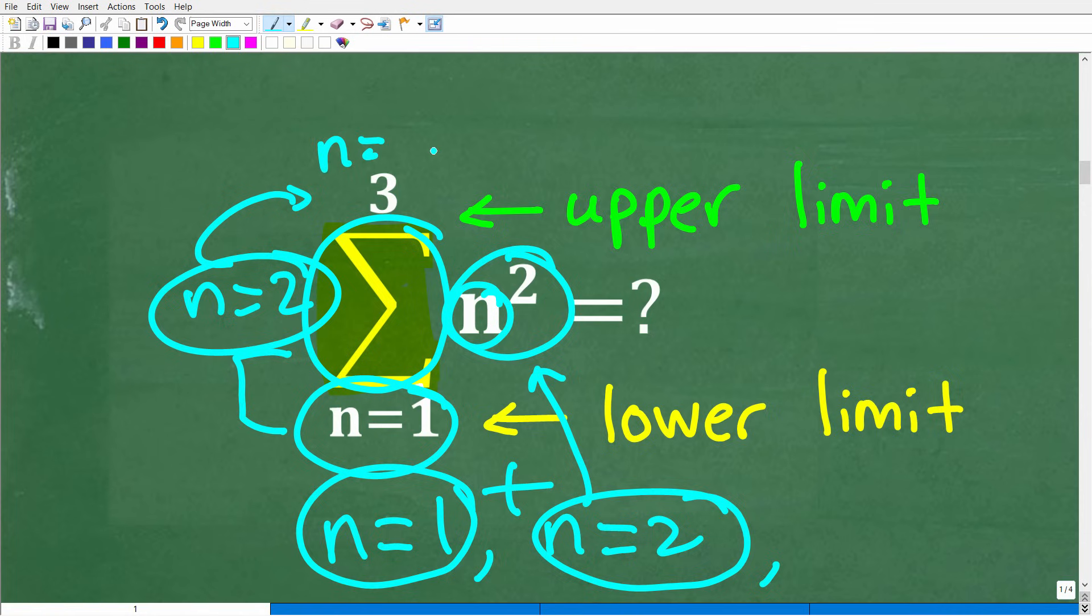So we're going to index up until n is equal to 3, and then we're going to stop. So this is the way the summation notation works.